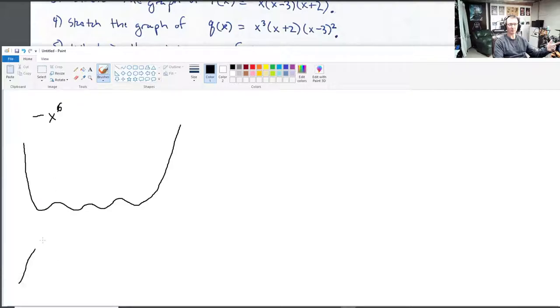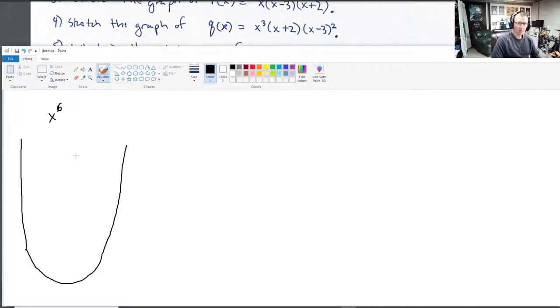That's the end behavior of this. If there was a negative here, this thing would be flipped over. Okay, but this is the general shape. It just looks more or less like this. Okay? Alrighty. So let's get into it now. What do the wiggles look like?